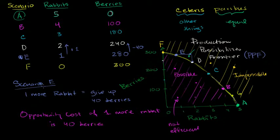Assuming we are in Scenario E, one more rabbit, I have to give up 40 berries. And another term, when we talk about the opportunity cost of producing one more rabbit here, when we talk about the opportunity cost of producing one more unit, that's sometimes called the marginal cost. So this right over here, you can also view as the marginal cost.